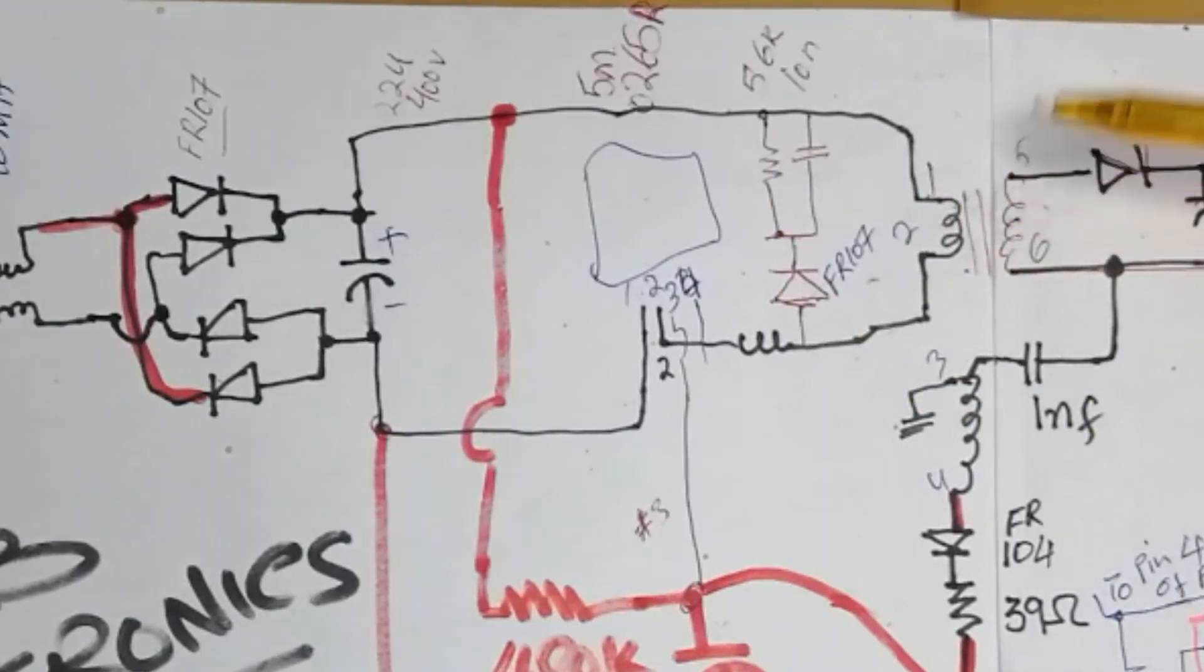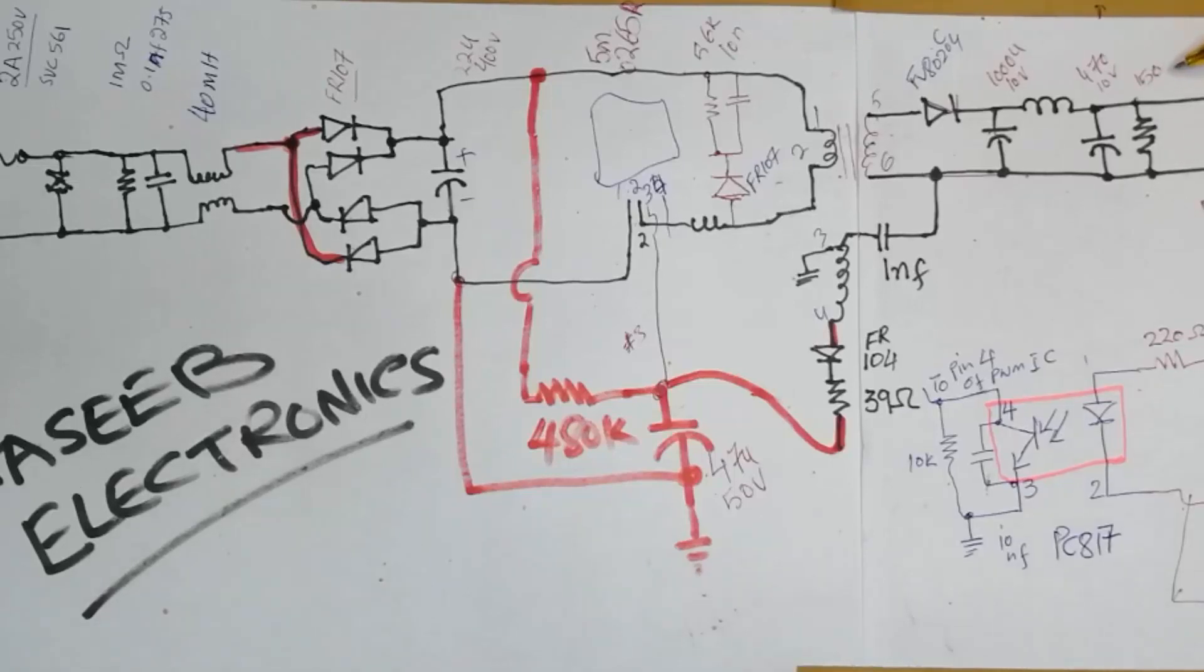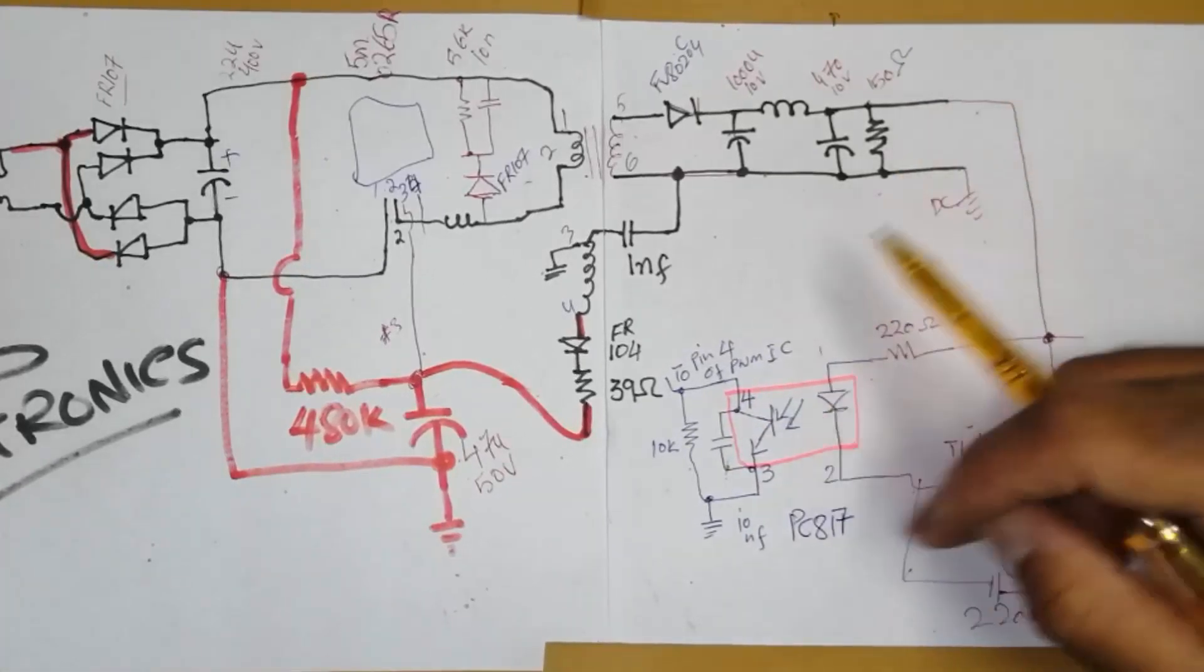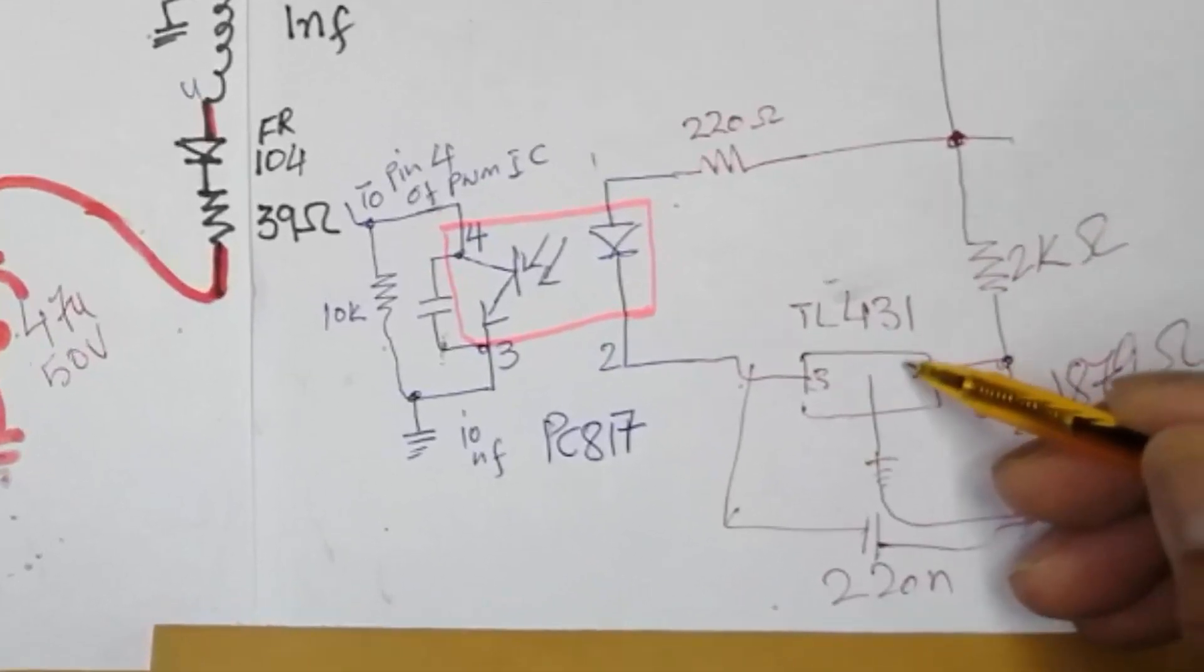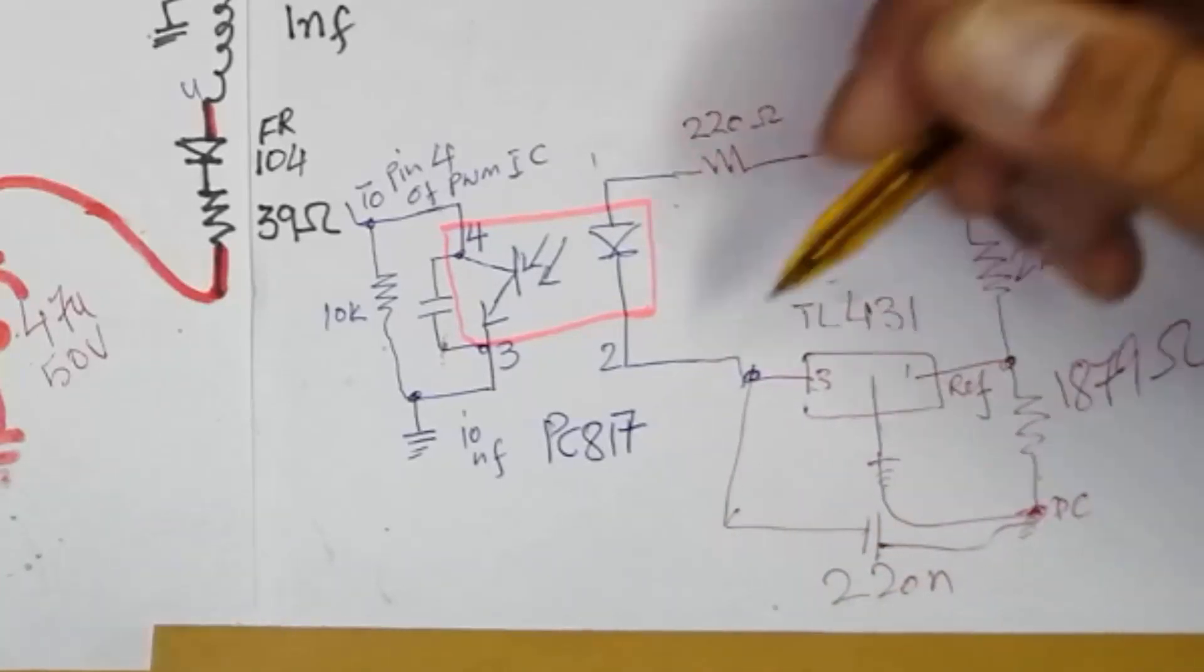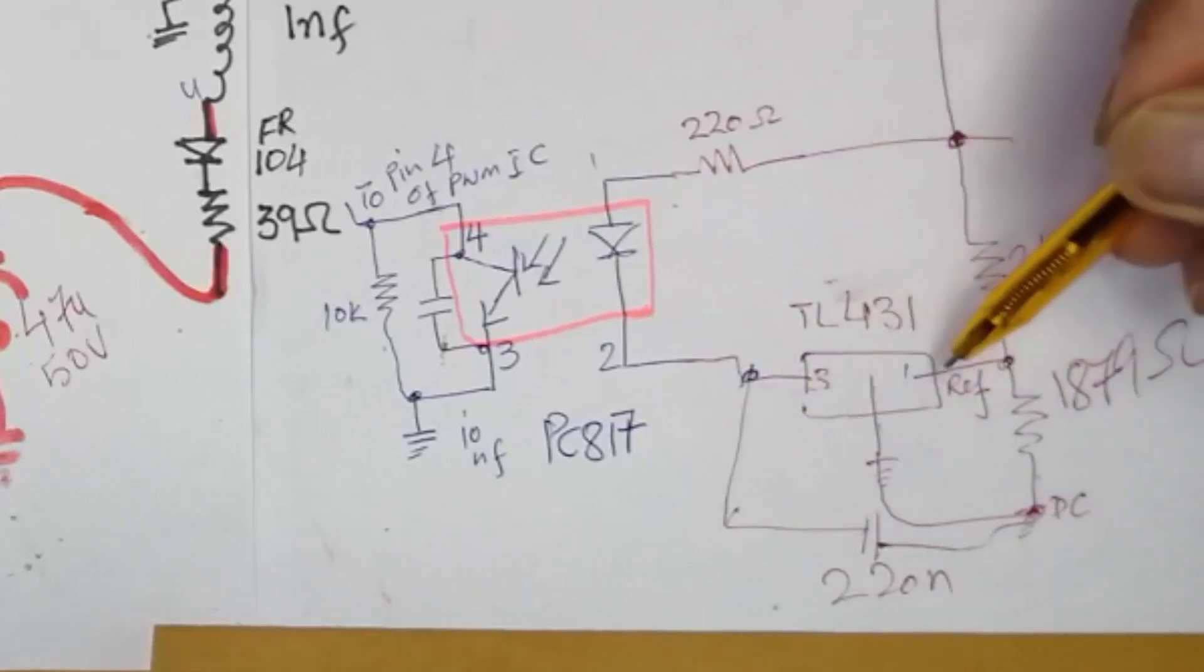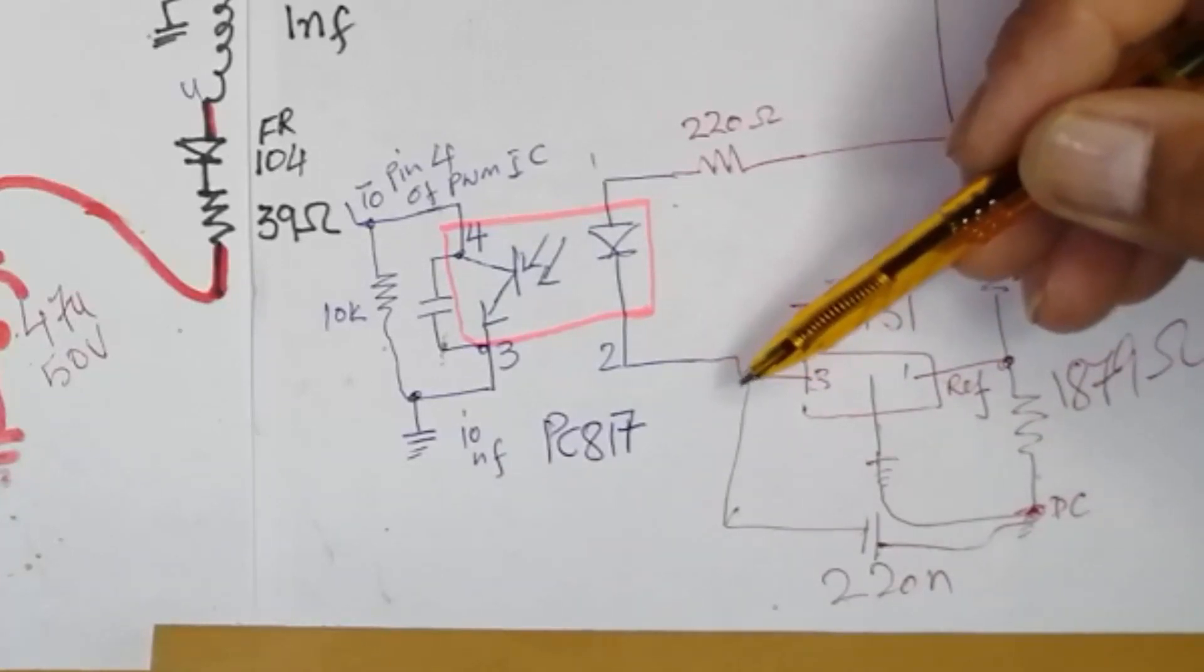In the secondary we have this diode, this rectifier is used, one capacitor 1000 microfarad 10 volt, inductor, capacitor, resistor, 150 ohm. Then we take this voltage to this feedback point. In this feedback circuit, this feedback circuit is connected through two resistors, 2k, 2k, to apply a reference voltage at pin number 1 of TL431. Pin number 2 is connected to ground and one capacitor 220 nano from pin number 3 to ground to remove the false starting pulses.